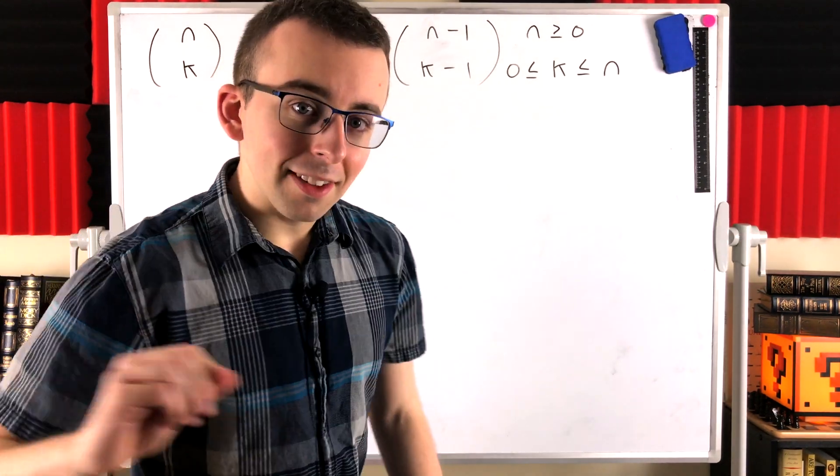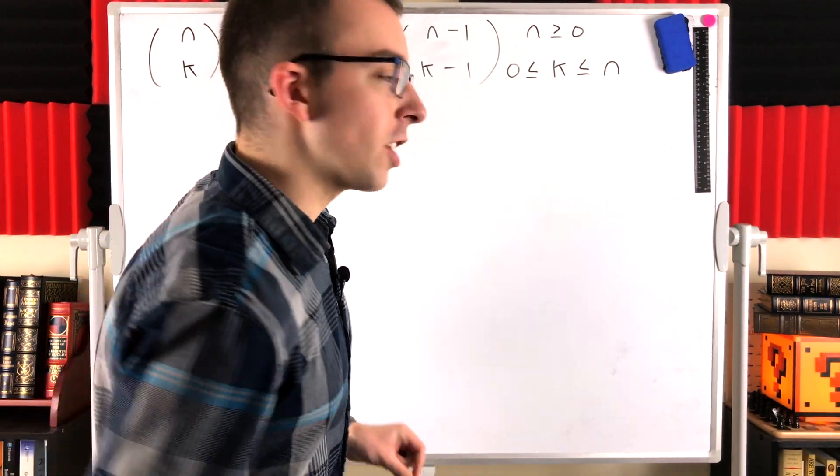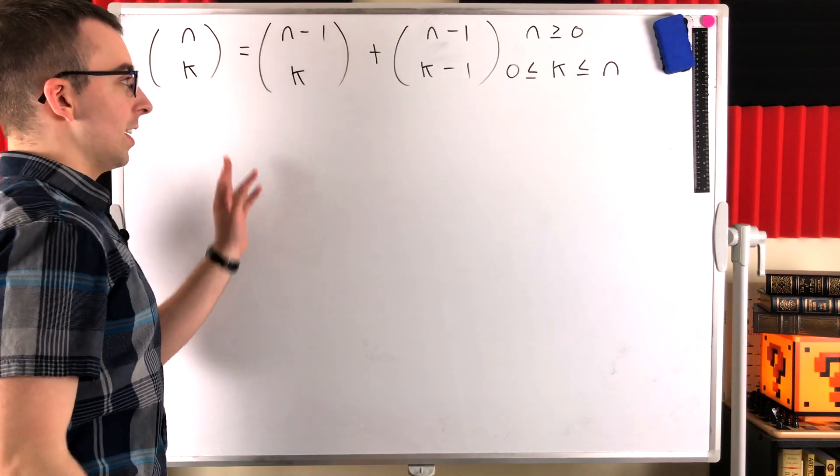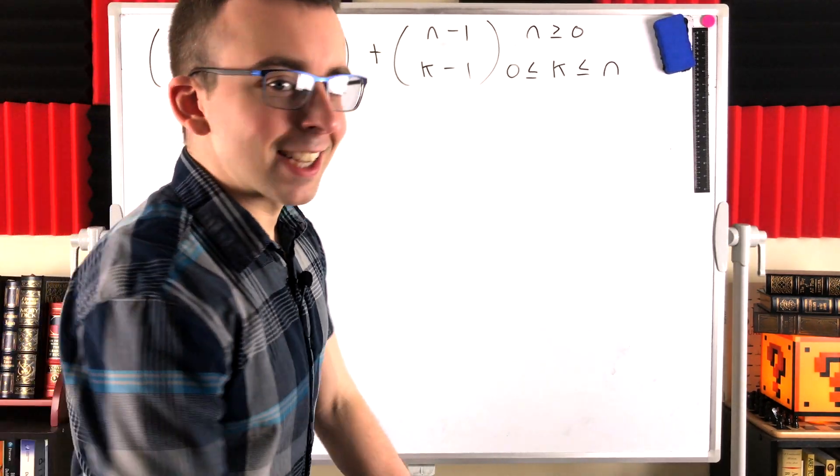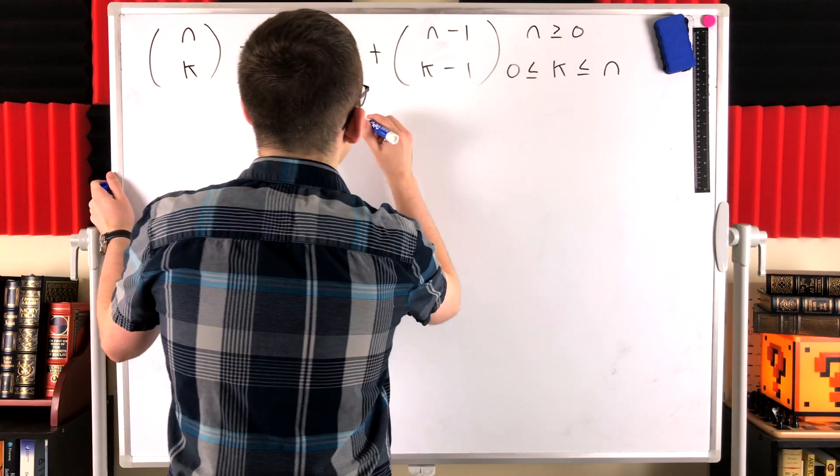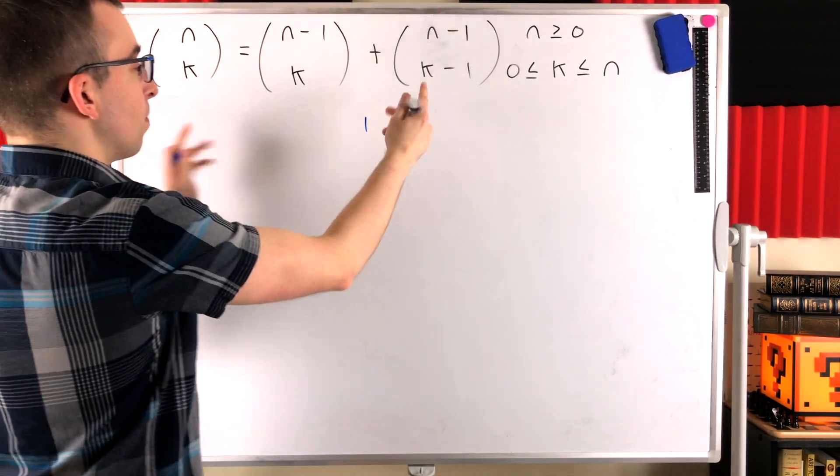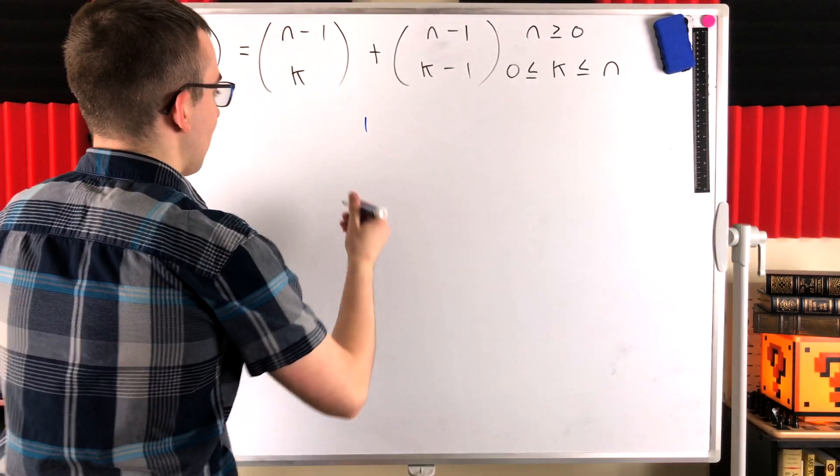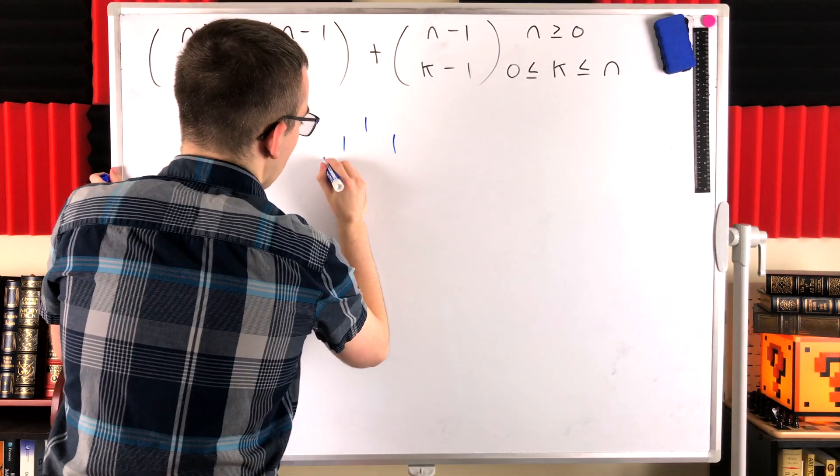Now, if you have written out Pascal's triangle before, whether or not you know it, you are very familiar with this equality, even though you might not recognize it. Because if we start to write out Pascal's triangle, we're using this to write out these numbers. It's more apparent if we go down a few rows.